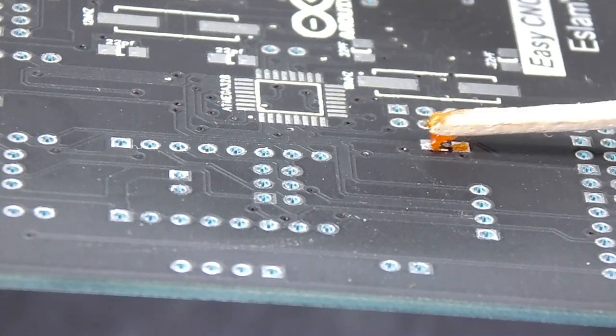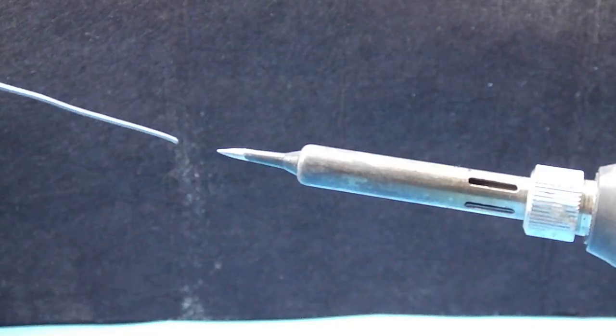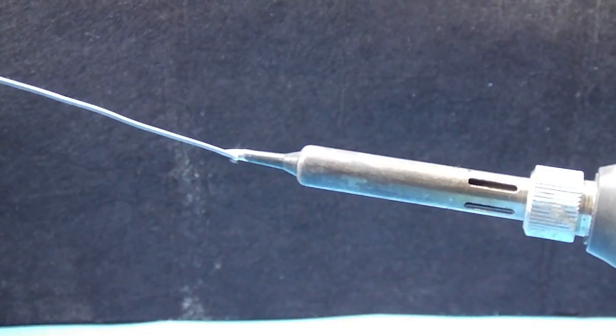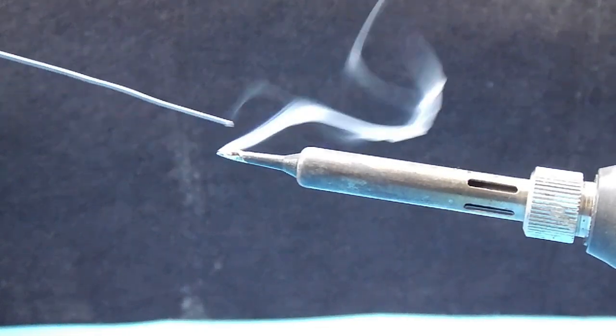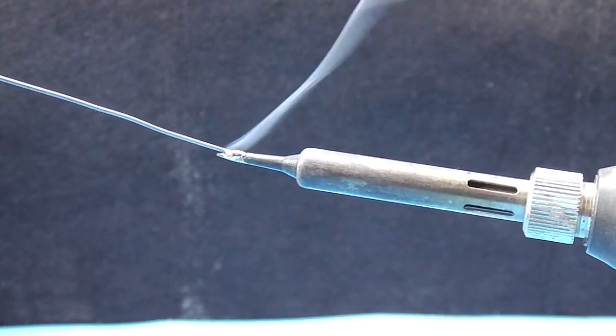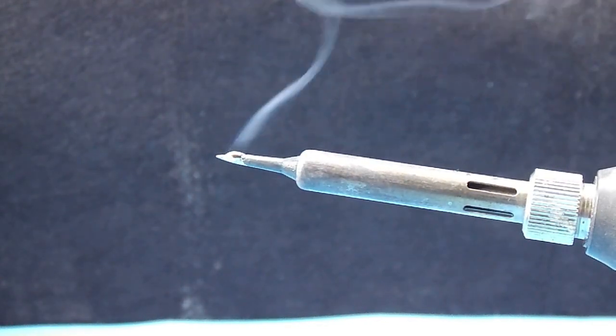But why we add flux while we have it inside the soldering wire? Actually, because when we add solder to the tip, the whole flux inside the solder wire burns out. That's why we add flux again to the board.